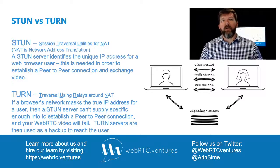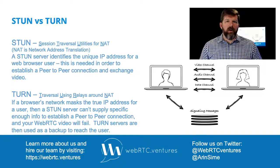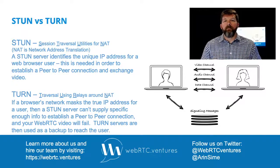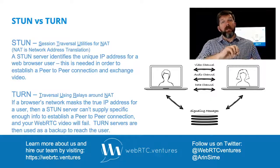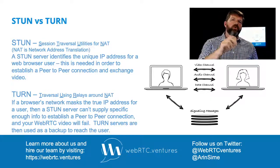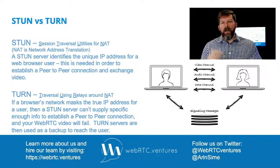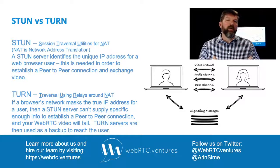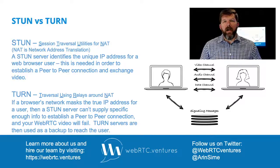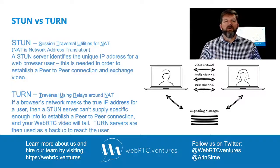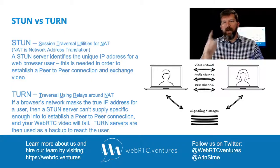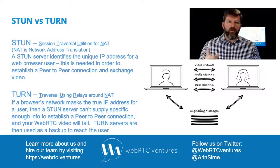But sometimes the STUN server can't do that, and that's where a TURN server comes in. TURN is basically your backup to STUN and it's for relaying the connection — Traversal Using Relays around the Network address. When you can't get the true unique IP address for one of those parties, you use a TURN server to relay that information between the two parties.